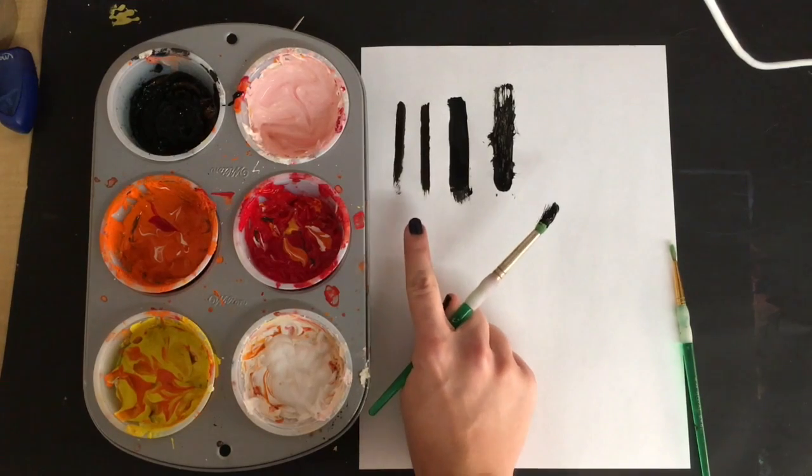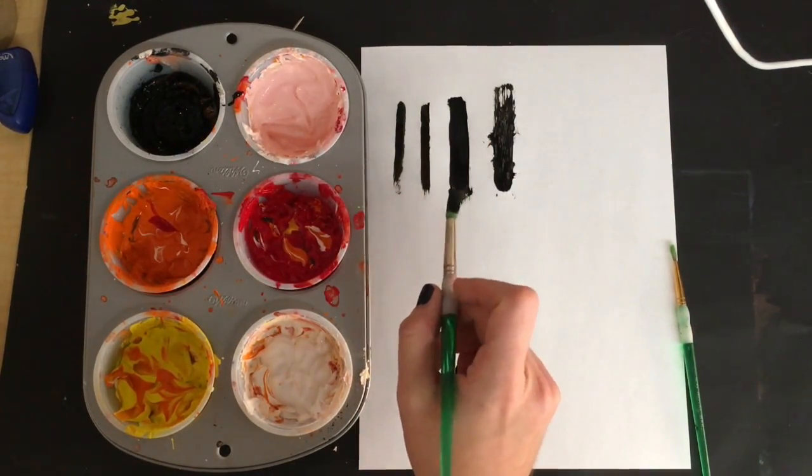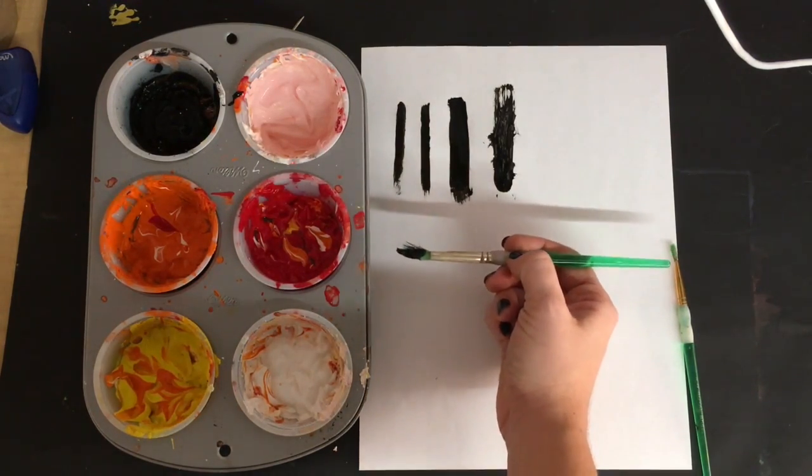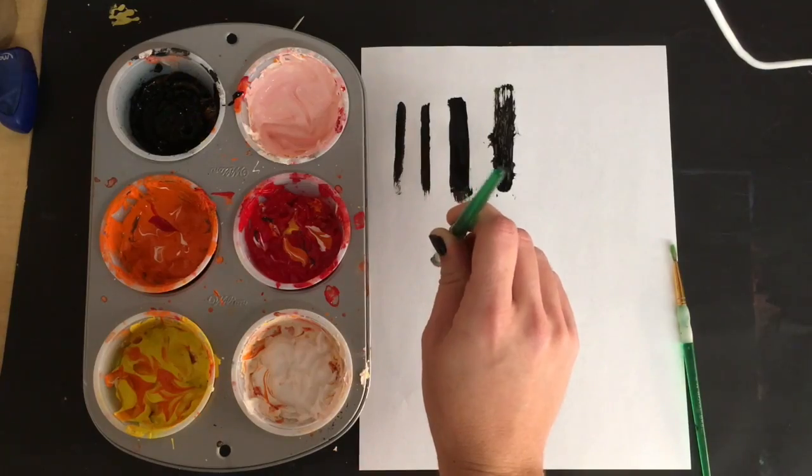If I want to make thin lines with my paintbrush, one thing I want to make sure I'm doing is holding it on the grip. Instead of holding my brush sideways, I want to be holding my brush very vertically.